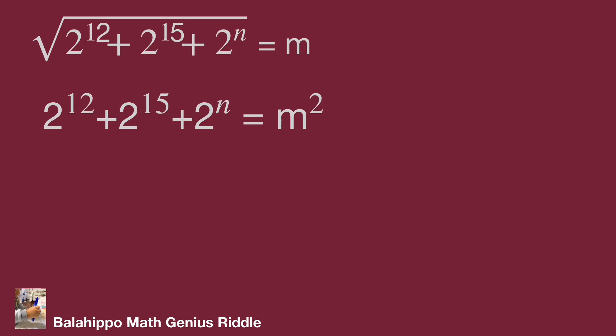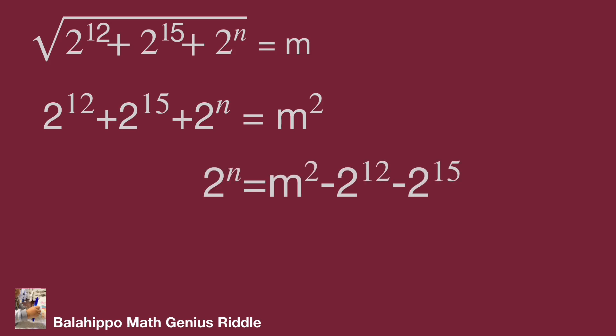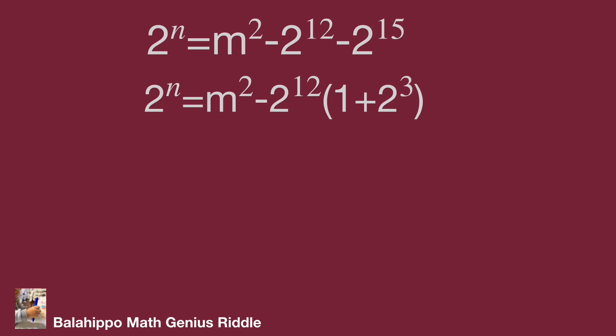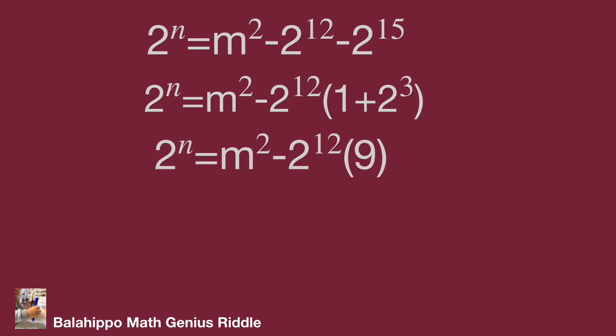I'm going to utilize the squares formula. Move the 2 power of 12 plus 2 power of 15 items to the right side of the equation. The equation becomes: 2 power of n equal to n squared minus 2 power of 12 times bracket 1 plus 2 bracket.